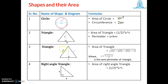Another formula: if all sides are given as a, b, and c, then area of triangle is equal to the square root of s(s minus a)(s minus b)(s minus c), where s is the semi-perimeter of the triangle, and the formula is s equals a plus b plus c divided by 2.